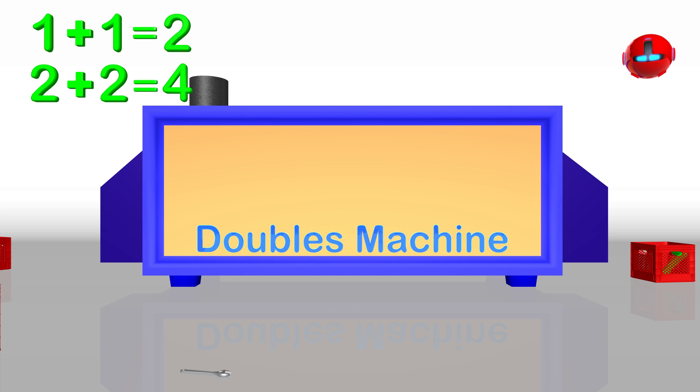Let's review some doubles to make sure we know if the machine is fixed. We already know 1 plus 1 is 2, and 2 plus 2 is 4. Here we have 3 doubled, which equals 6.